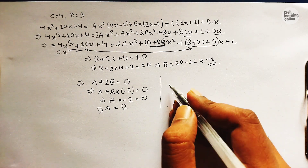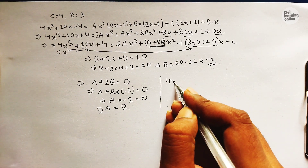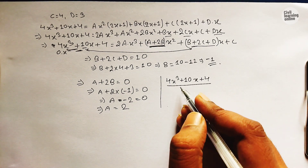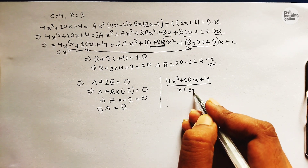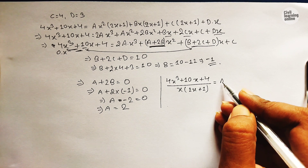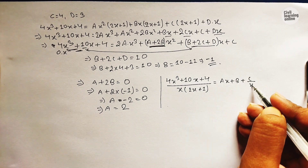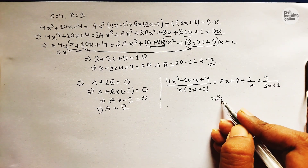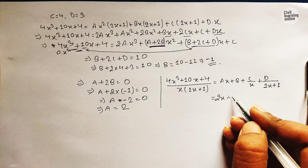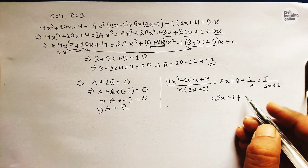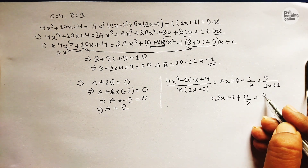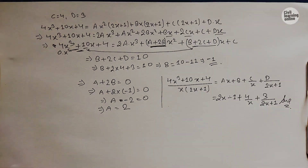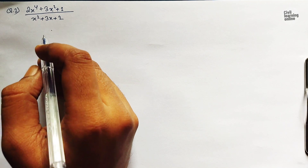The final answer for Problem 1 is: (4x³ + 10x + 4) / (x(2x + 1)) = 2x − 1 + 4/x + 3/(2x + 1). This is our final partial fraction decomposition for this problem.